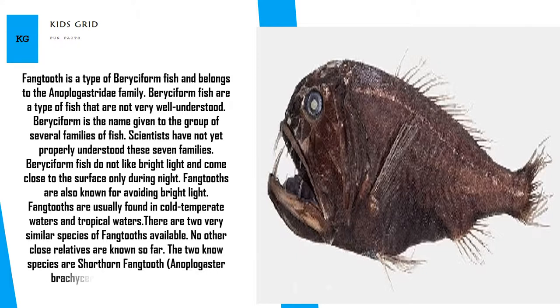The two known species are shorthorn fangtooth, Anoplogaster brachycera, and common fangtooth, Anoplogaster cornuta.